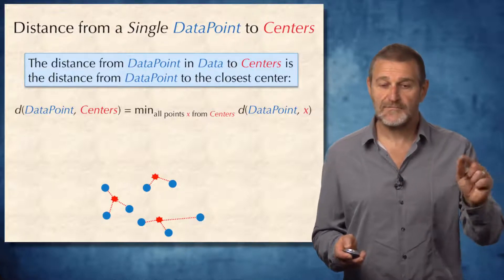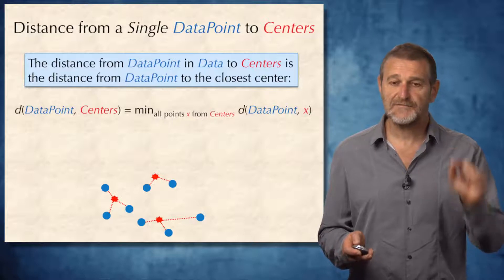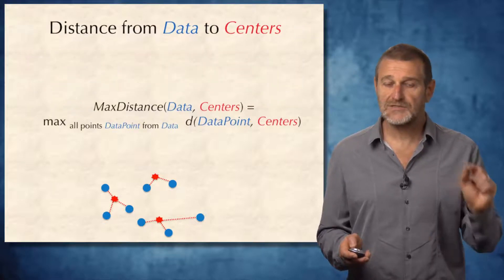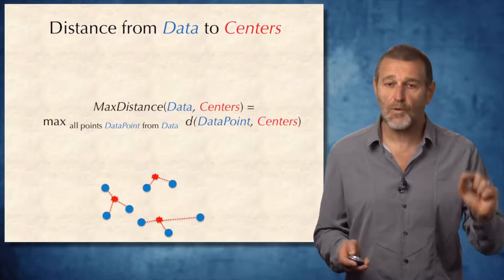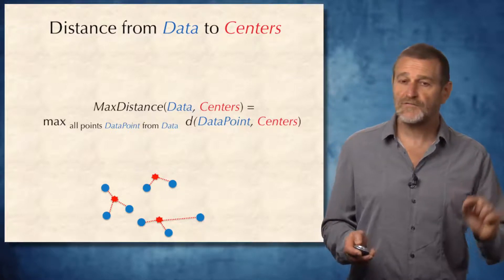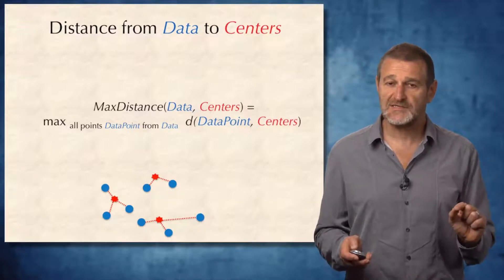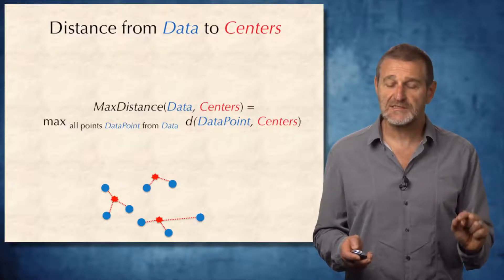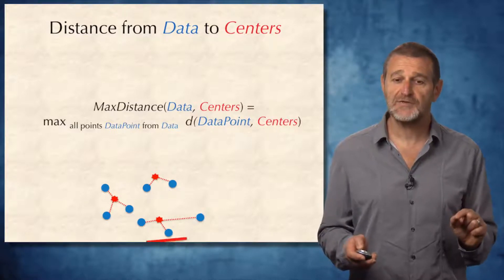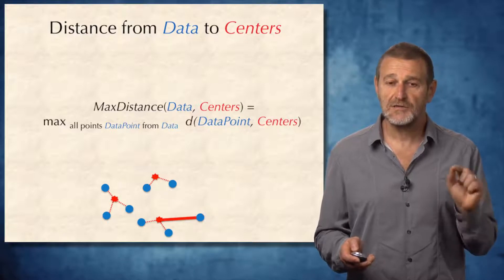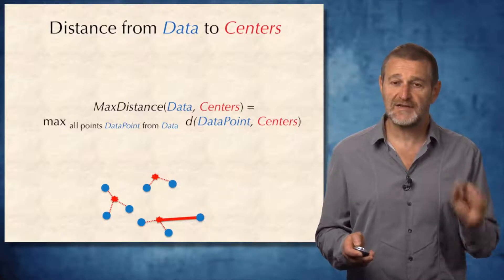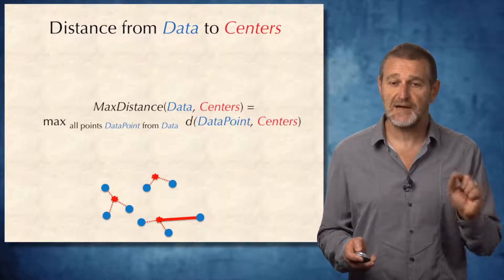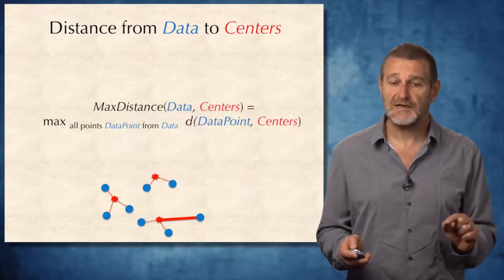Now that we have defined the distance from a single data point to centers, our goal is to define the distance from all data points to centers. The natural notion of such distance is the maximum distance among the individual distances we just computed. That is how we define the max-distance objective function for clustering.